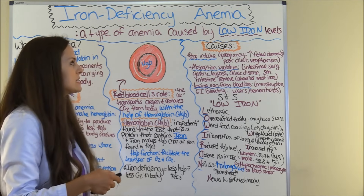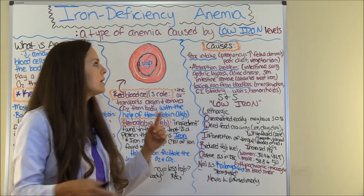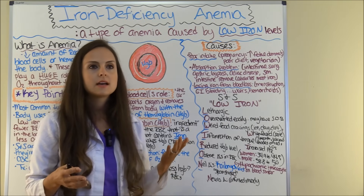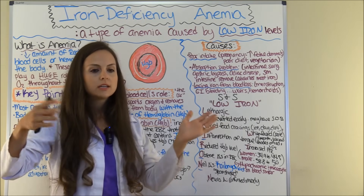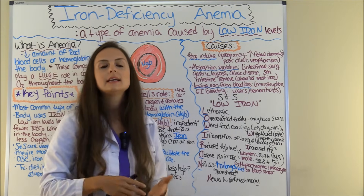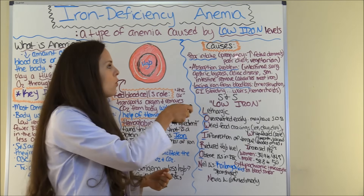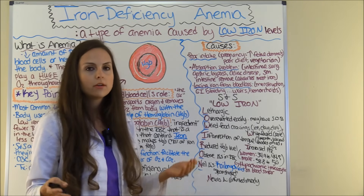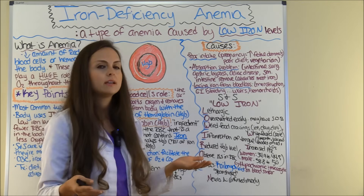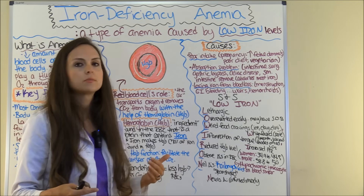What causes iron deficiency anemia? Three big things, easy to remember. Number one: poor intake. This can come from pregnancy — as the mother progresses toward nine months, the fetal demands for iron are great, and if she's not taking it in through her diet or prenatal vitamins, she can experience this. A poor diet overall, malnourishment, or a vegetarian diet where the patient needs to make sure they're incorporating iron-rich foods — they are all susceptible to this.